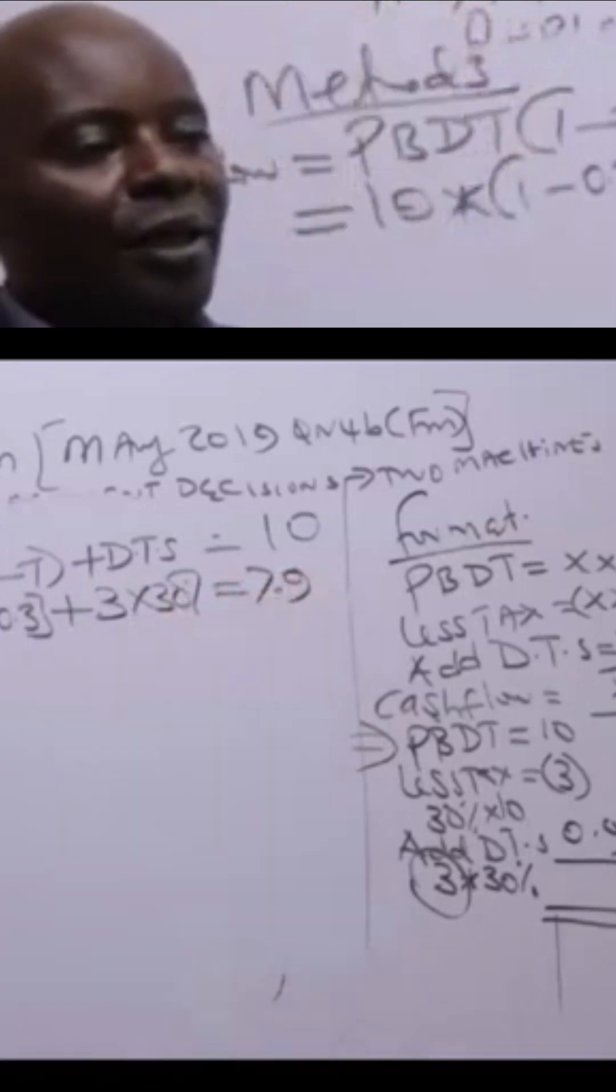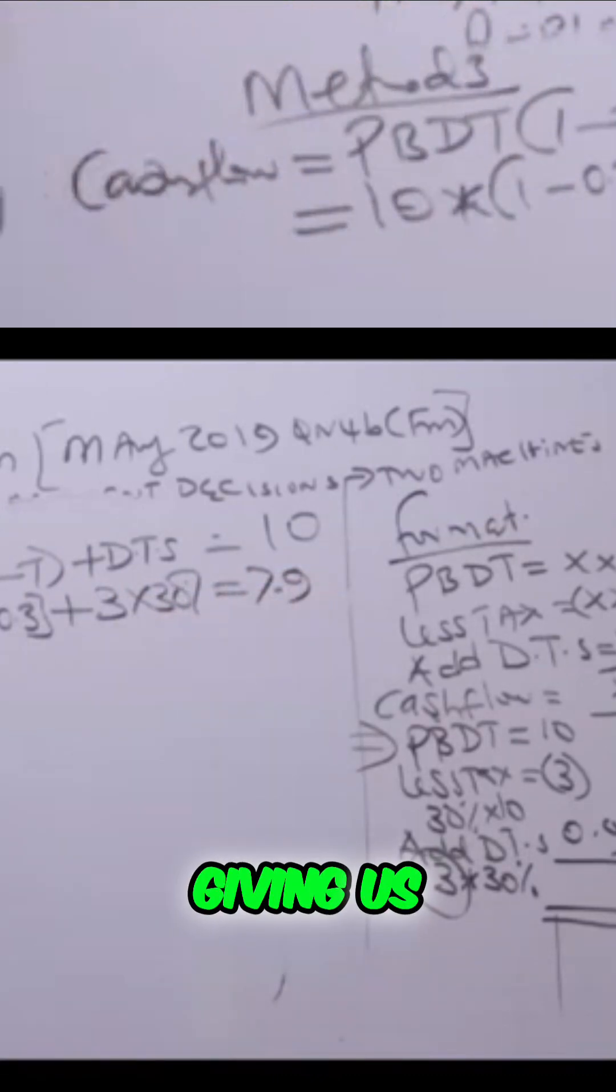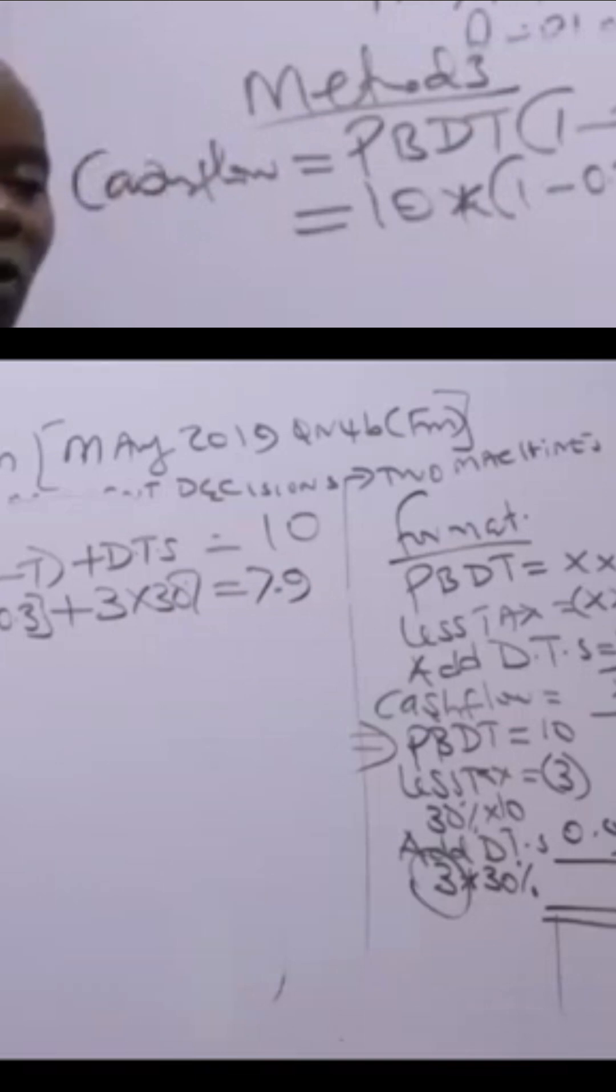We multiply this with 0.3 or 30%. Will this end up giving us 7.9, my good students? Please confirm.